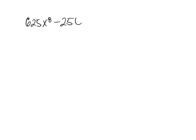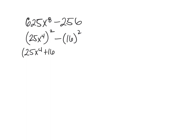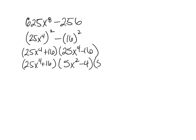Here's an example: 625x to the 8th minus 256. Well, 625 is 25 squared, and x to the 8th is x to the 4th squared, and 256 is 16 squared. So this is 25x to the 4th squared minus 16 squared — a difference of squares. Our factors are 25x to the 4th plus 16 and 25x to the 4th minus 16. Now I still have a difference of squares. The sum of squares doesn't factor in the real numbers, but the difference of squares does: 5x squared plus 4 times 5x squared minus 4.